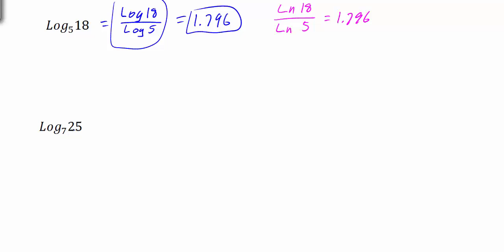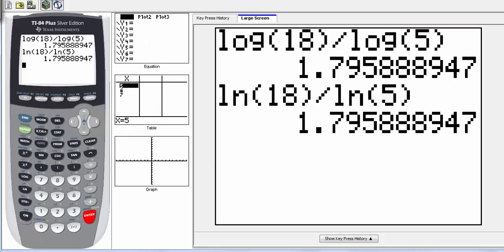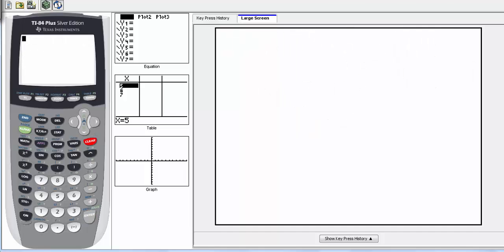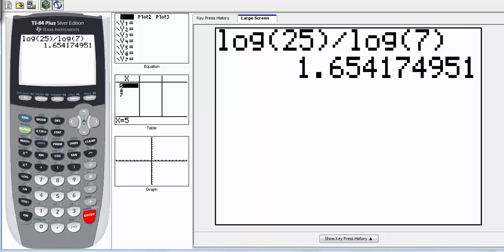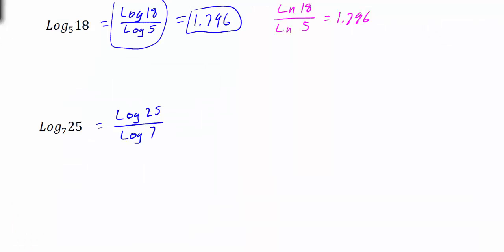Here we have log base 7 of 25. Again, we want to write it as the common log. So that would be the log of 25 divided by the log of 7. And if we go to the calculator, we type in the log of 25, close the parentheses, divided by the log of 7. And notice here we get 1.65. So your answer would be 1.65.